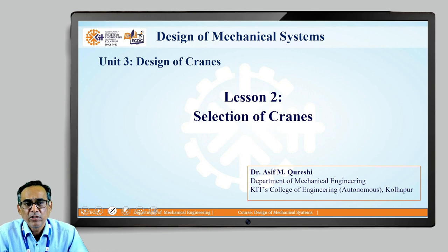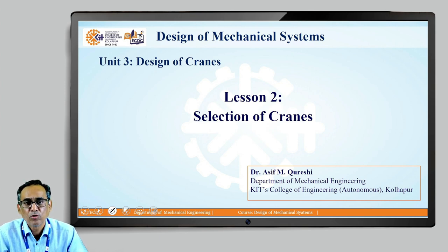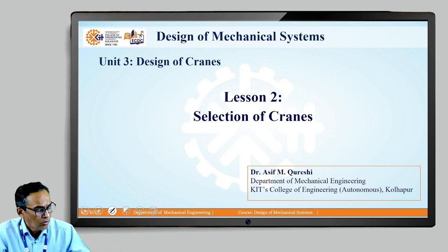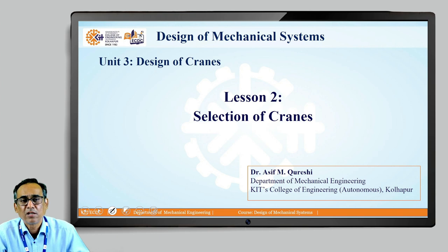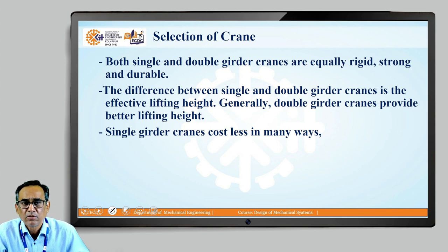In the previous video, we discussed the types of cranes. There are basically four types of cranes, out of which single girder and double girder cranes are most commonly used. When discussing the selection of a crane, the question arises: out of the single girder and double girder, which should be selected? Both single and double girder cranes are equally rigid, strong, and durable, but the effective lifting height is different.